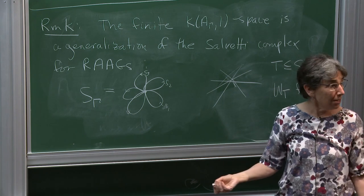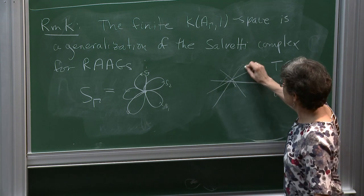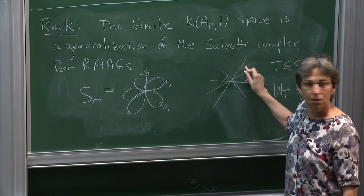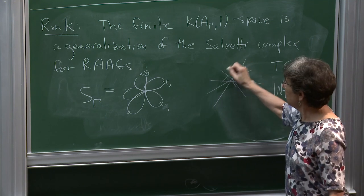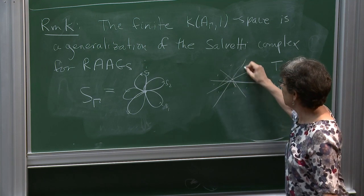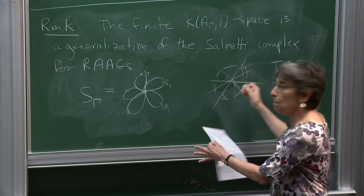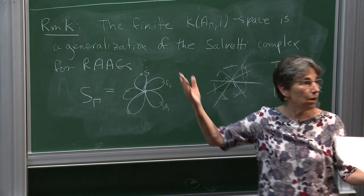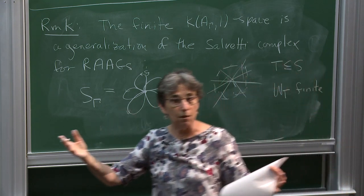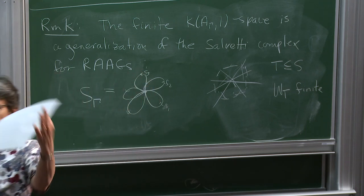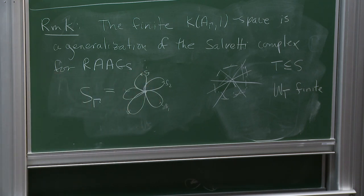Conjecture 4 implies conjecture 2 because if you have a K(π,1) space for a group, you can look at the action of a subgroup on the universal cover and get a K(π,1) for that subgroup. But torsion groups can't have finite-dimensional K(π,1) spaces — so a group with a finite K(π,1) space cannot contain torsion. Hence A(γ) is torsion free.